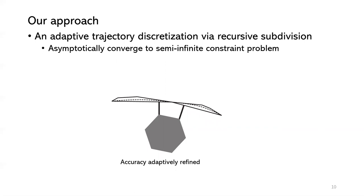For adaptive trajectory discretization via recursive subdivision: in our method, we recursively subdivide the convex hull, making it smaller and smaller. In that way, the convex hull converges to the trajectory. We also prove that the optimization problem will asymptotically converge to the semi-infinite constraint problem, so we can handle the semi-infinite constraint in this way.